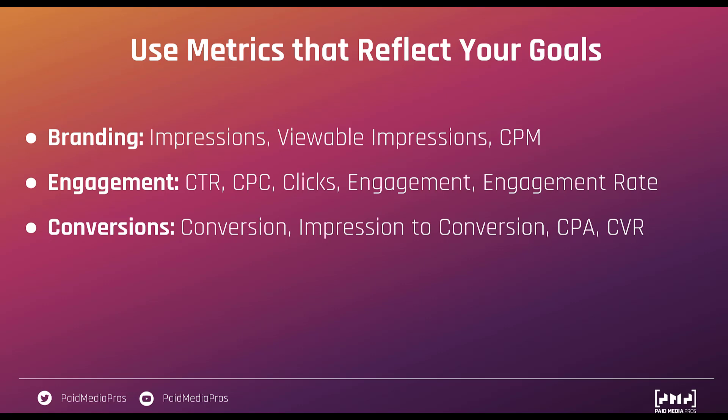One of my favorite metrics is impression to conversion. Instead of calculating your conversion rate by taking conversions divided by clicks, for this metric you actually take conversions divided by impressions to find how many impressions it takes on average to get a conversion. With display, where there are tons of impressions available, I like to use this metric sometimes more often than click-through rate, because display has a little bit more of a need to catch somebody's eye. And if a certain theme, ad size, or ad format does a better job of catching somebody's eye and they eventually convert, I want to lean into that with my display campaigns.